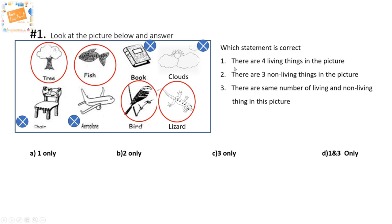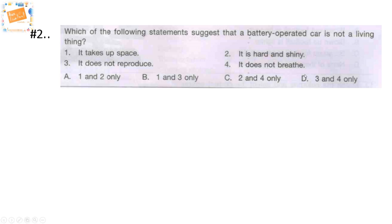Now let's revisit the statements. Statement one: there are four living things in the picture. Counting — one, two, three, four — statement one is correct. Statement two: there are three non-living things. We've marked the non-living things and counted one, two, three, four — so statement two is not correct. Statement three: there are the same number of living and non-living things. Living things: tree, fish, bird, lizard — four. Non-living: clouds, book, aeroplane, chair — four. Equal in number, so statement three is also correct. Our correct option is D — statements one and three only.